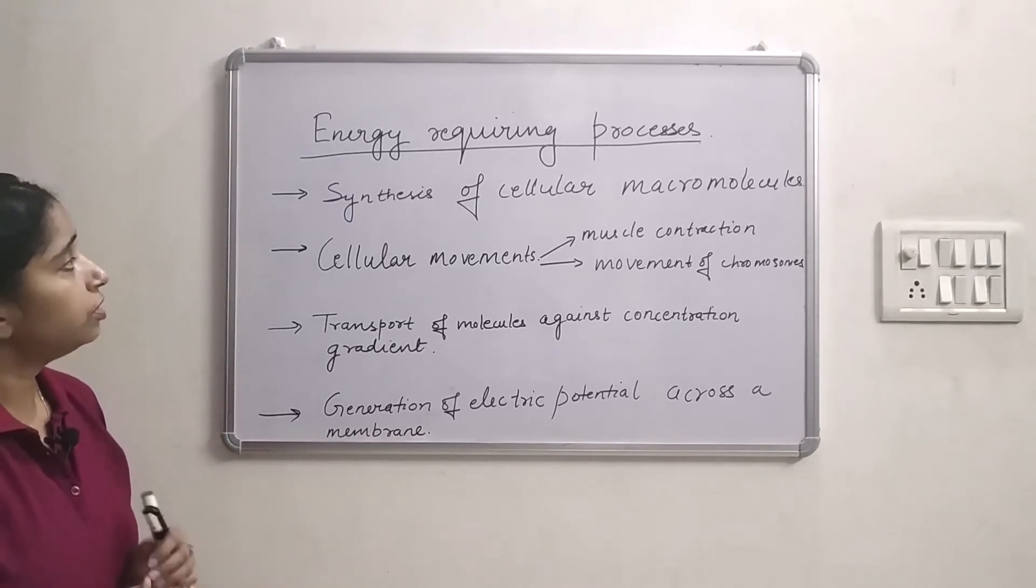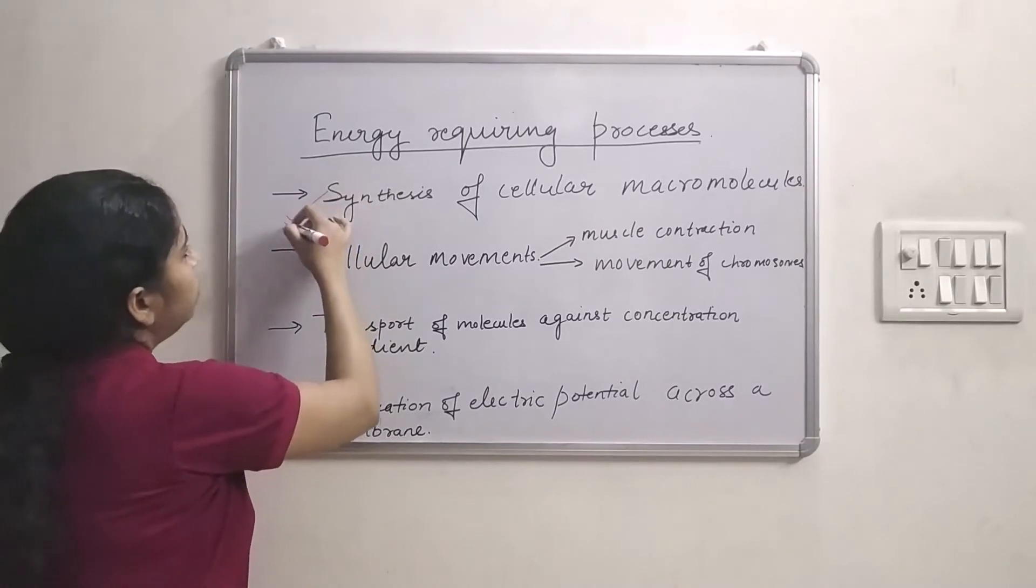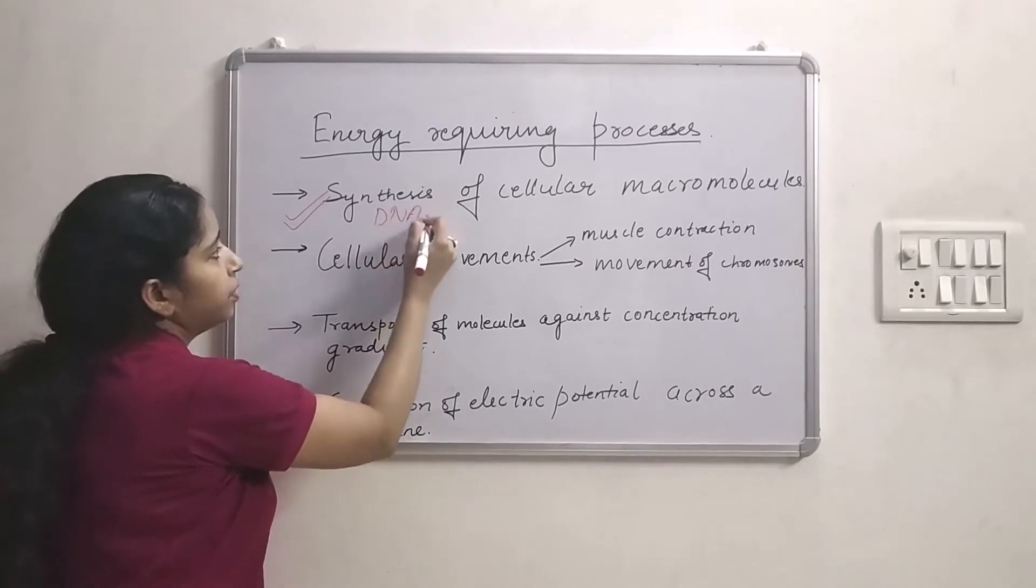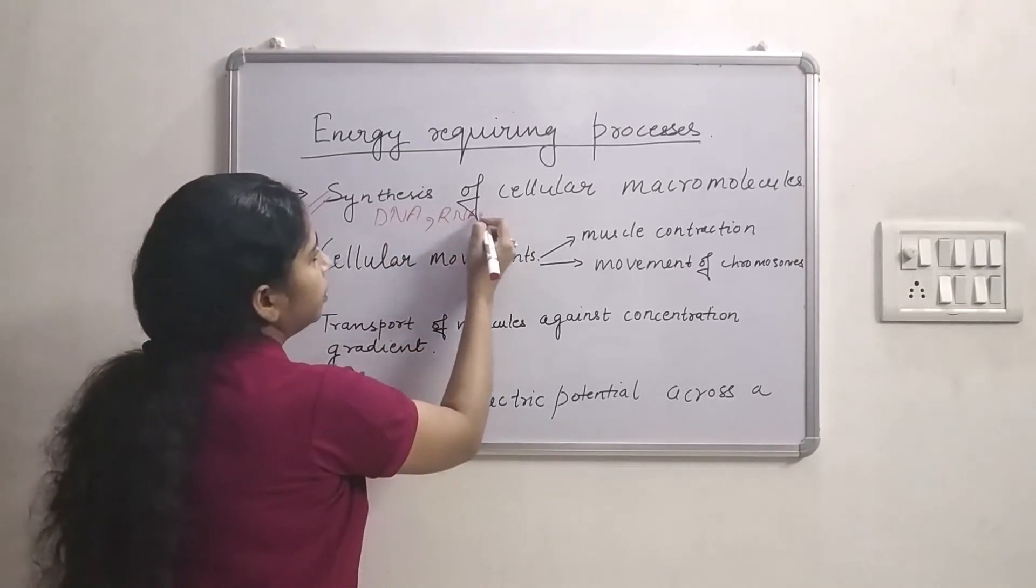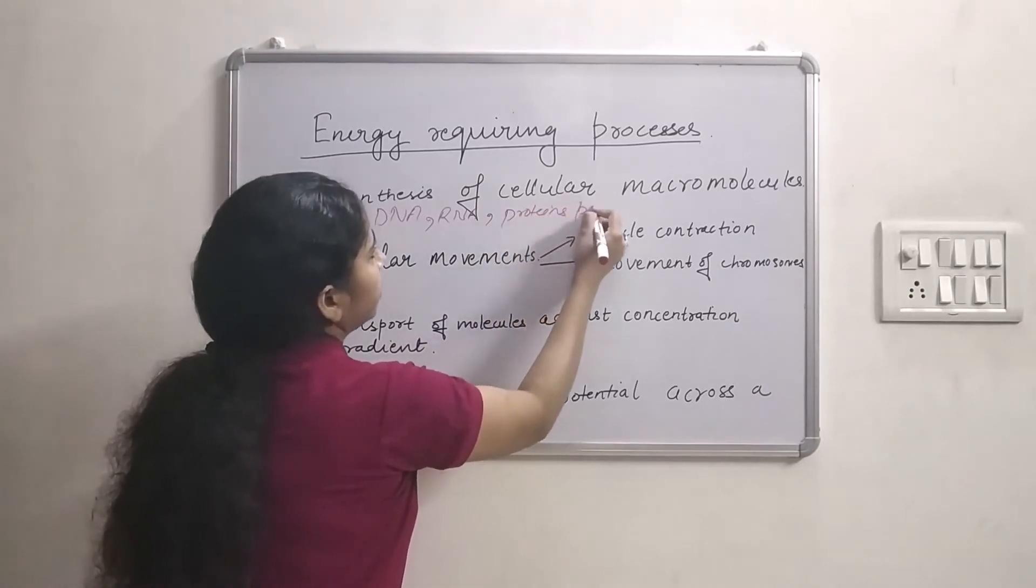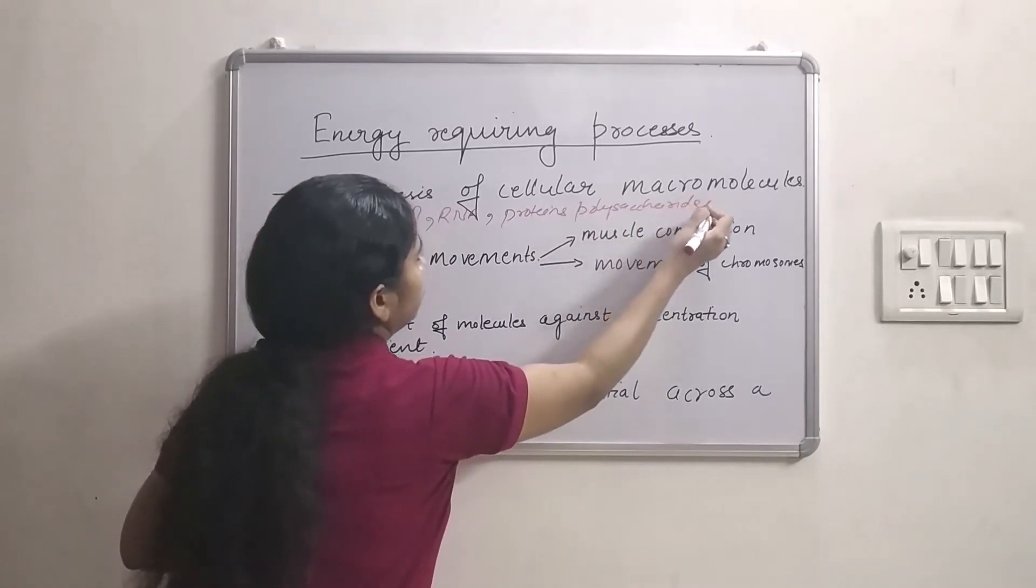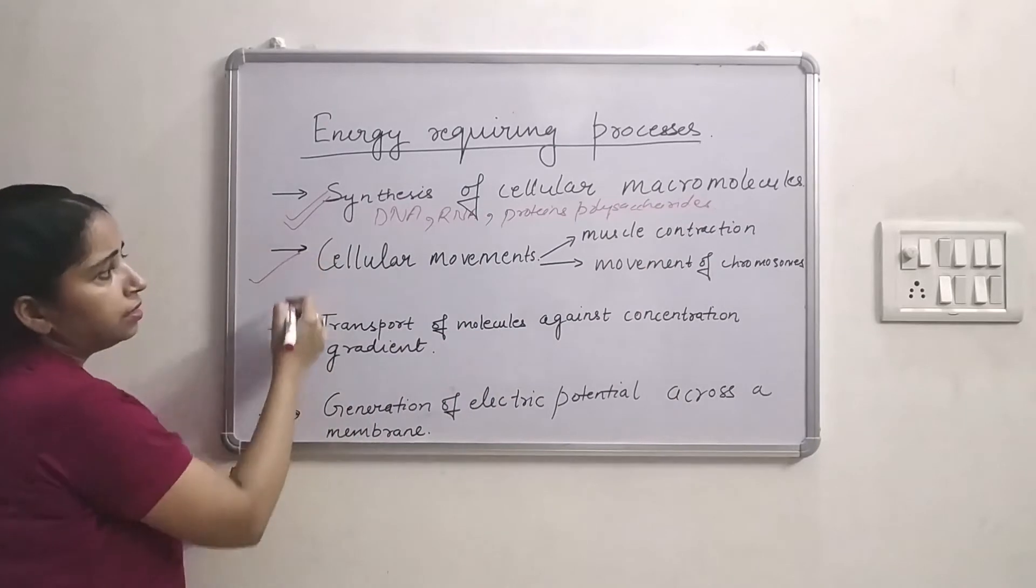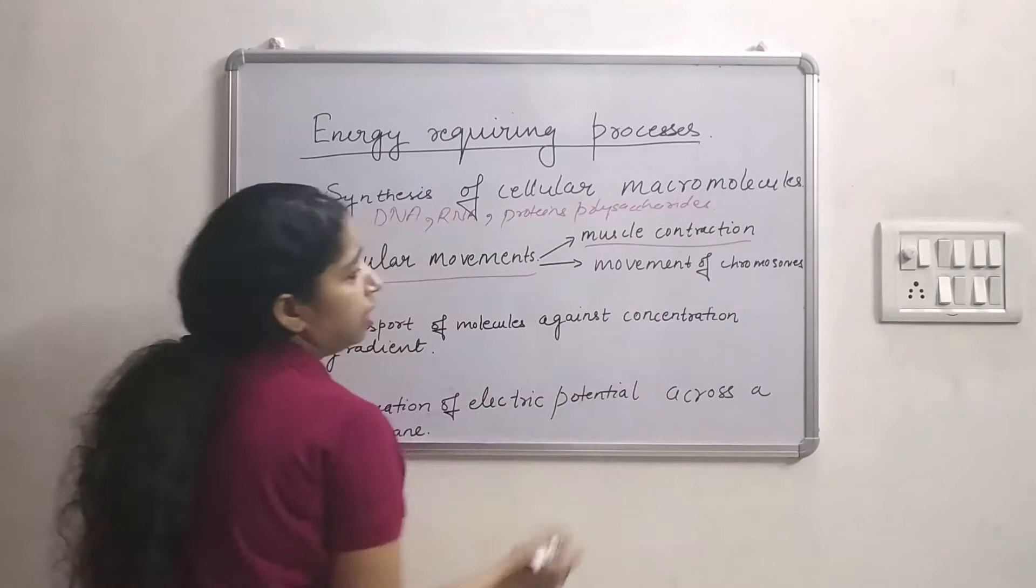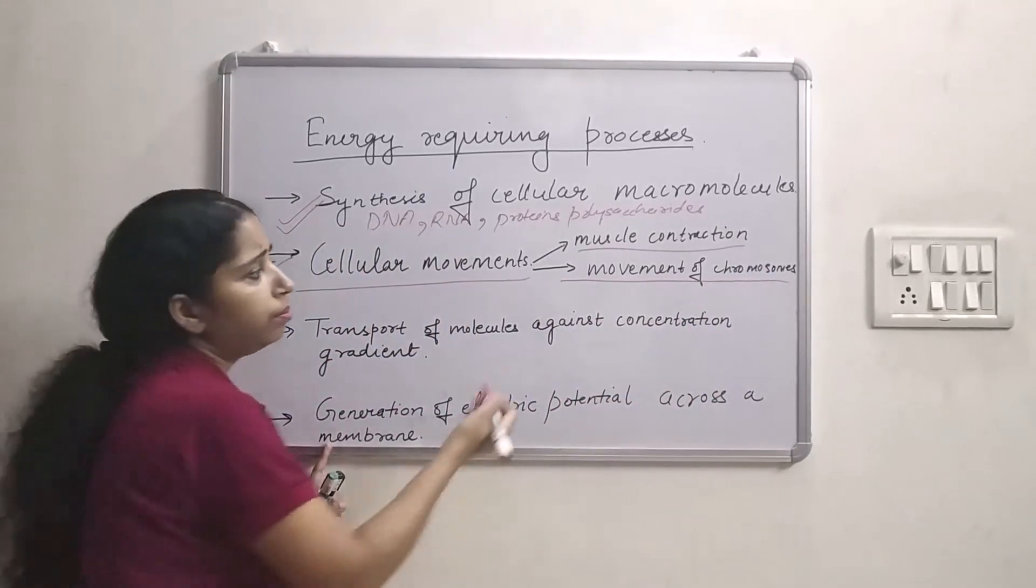So these processes are, let me give you a few examples. Synthesis of cellular macromolecules such as DNA, RNA, proteins, polysaccharides. Second is cellular movements such as muscle contraction and movement of chromosomes during cell division or mitosis.